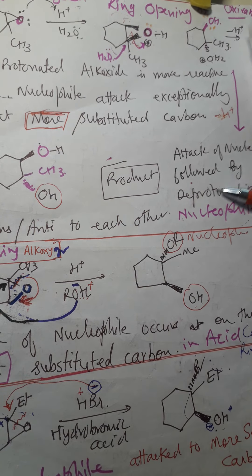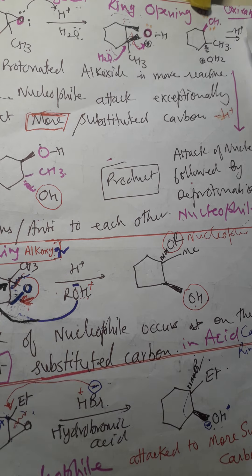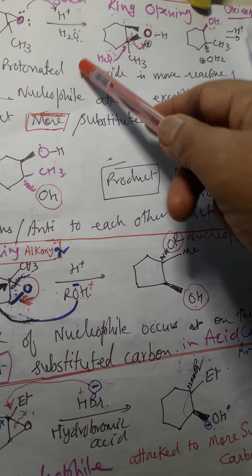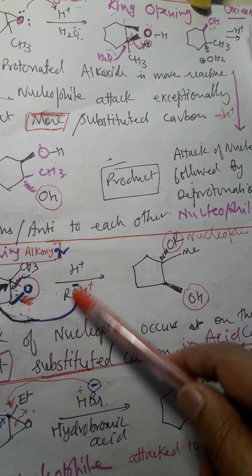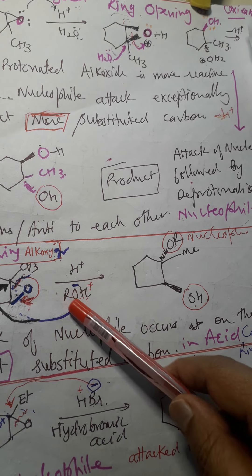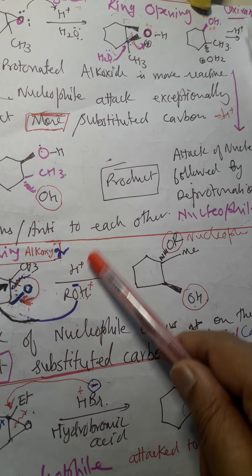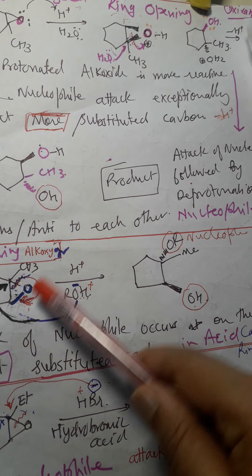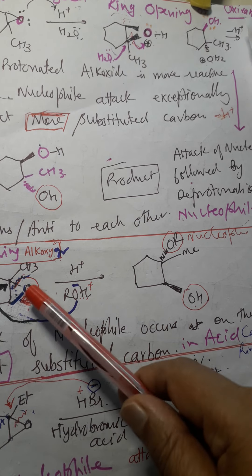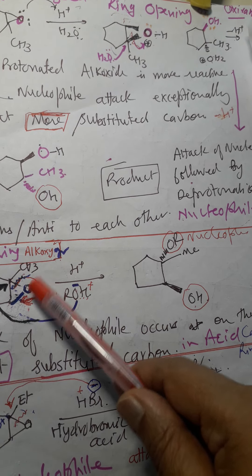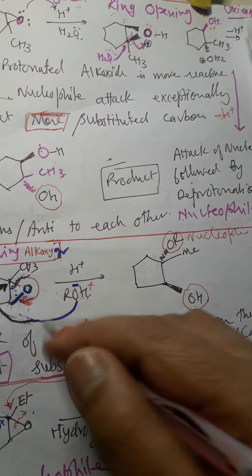Now we take another example. In the previous case we used water; now in the second case we are using ROH — that is, an alcohol. First we protonate this epoxide, so it becomes protonated with H⁺. Then ring cleavage will occur.